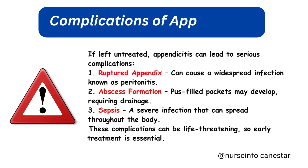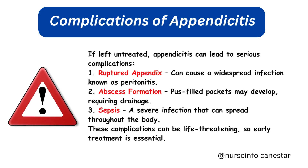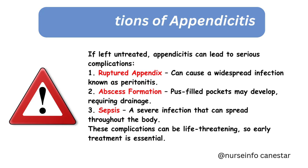Complications of Appendicitis. If left untreated, appendicitis can lead to serious complications. 1. A ruptured appendix can cause a widespread infection known as peritonitis. 2. Abscess formation: Pus-filled pockets may develop, requiring drainage. 3. Sepsis: A severe infection that can spread throughout the body. These complications can be life-threatening, so early treatment is essential.